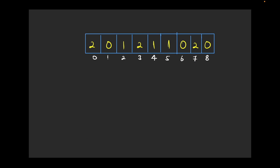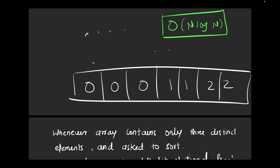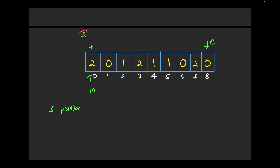For the Dutch National Flag algorithm, we need three pointers. Let's assign them: 'start', 'mid', and 'end'. Once the array is sorted, we can observe that all zeros are at the start, all ones are in the middle, and all twos are at the end. We compare every element with mid — at start we want zero, at mid we want one, and at end we want two.